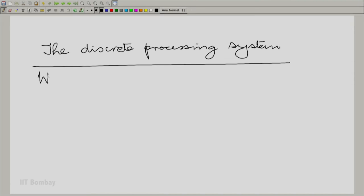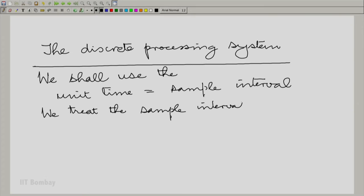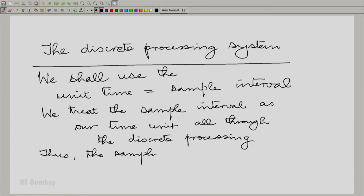Let us agree that we shall use the unit time equal to the sample interval. Between whatever be that sample interval, it could be 1 millisecond, it could be 0.1 millisecond, we will agree that we treat that as our unit all along the discrete processing. As a consequence, the sampling frequency becomes the reciprocal of this. On the frequency axis, we think of frequency equal to 1 as the sampling frequency. The unit of frequency also becomes 1 now.